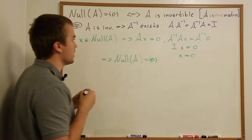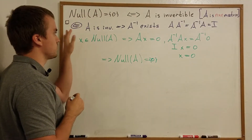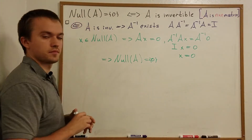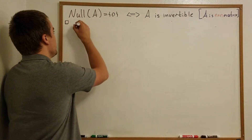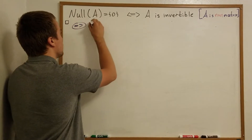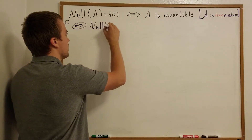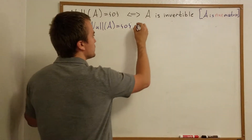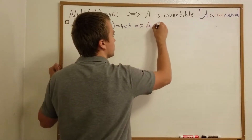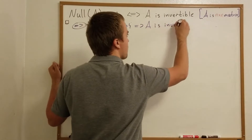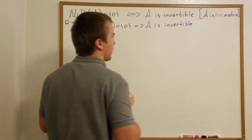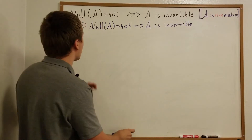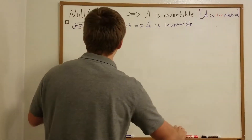We proved that direction. Now let's prove the other direction. We're given that null(A) is just the zero vector and we want to show that A is invertible. Here are a couple of ways to think about A and how to prove this result.